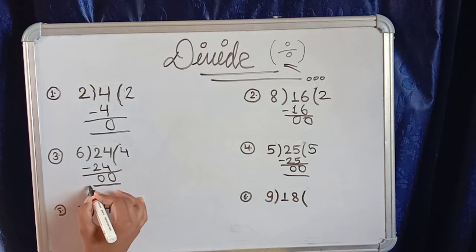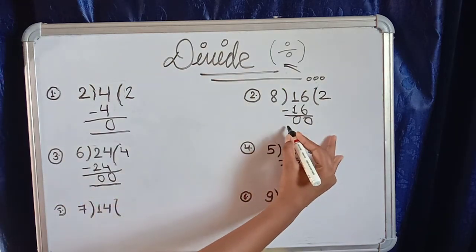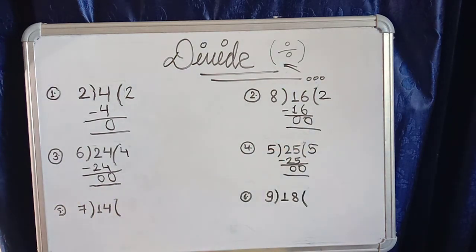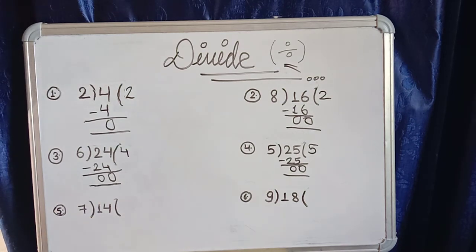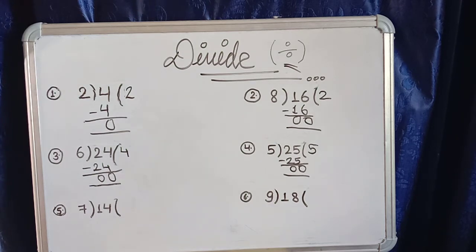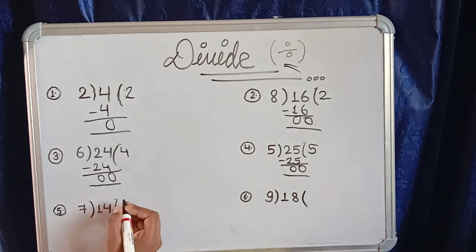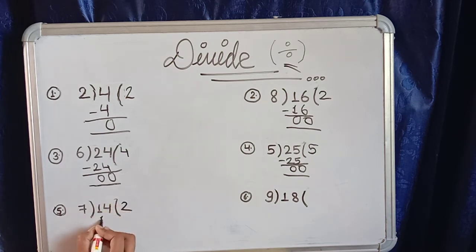Question number five is 7 divided by 14. We use the 7 times table: 7 ones are 7, 7 twos are 14. So the answer is 2. Here we write 2, and here we write 14.